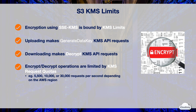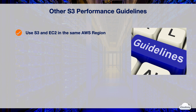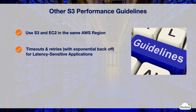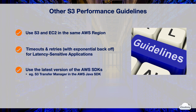KMS throttles the requests if you exceed a combined total of maximum uploads or downloads per second. When you work with S3 and EC2, it's recommended to have S3 buckets and EC2 instances in the same AWS region to reduce network latency and data transfer costs. For latency-sensitive applications, you should timeout and retry with exponential backoff for slower operations. When you retry a request, AWS recommends using a new connection to S3 and performing a fresh DNS lookup. S3 automatically scales in response to sustained new request rates and dynamically optimizes performance. AWS SDKs provide built-in support for S3 performance optimization, such as automatic retries on HTTP 503 errors and transfer manager horizontal scaling using byte-range requests. It's important to use the latest version of AWS SDKs to obtain the latest performance optimization features.